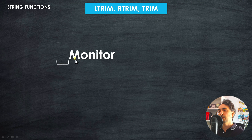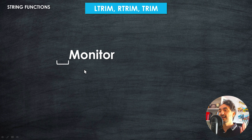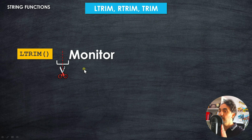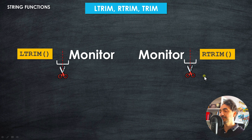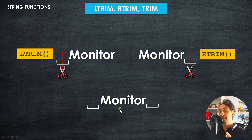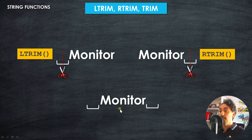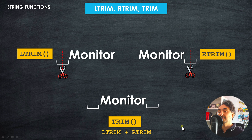Let's understand how those functions work with examples. If we have the word 'monitor' with a white space on the left side, we use LTRIM, which removes any unwanted spaces from the left side of the string. For the opposite situation — spaces on the right side — we use RTRIM, which removes spaces from the right side. If we have spaces on both sides, we can use both LTRIM and RTRIM.